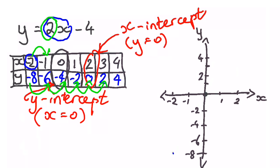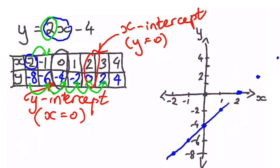Let's plot the points: (negative 2, negative 8) down here. (Negative 1, negative 6) just here. (0, negative 4) just here. (1, negative 2) just here. (2, 0) is here. (3, 2) is just here. And (4, 4) will be up here. Let's join them with a line and put arrows on the ends to show the line continues.